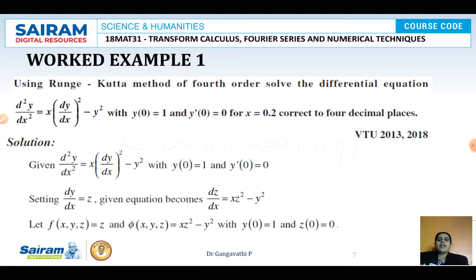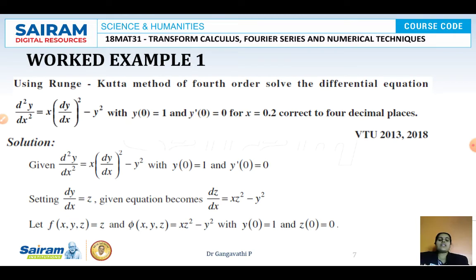Example 1: Use the Runge-Kutta method of fourth order to solve d²y/dx² + x(dy/dx)² − y² = 0, with y(0) = 1 and y′(0) = 0, for x = 0.2, corrected to 4 decimal places. Since x₀ = 0 and x1 = 0.2 with h = 0.2, only one stage is needed. This problem was asked in the 2013 and 2018 examinations.